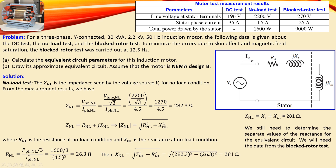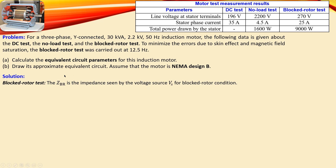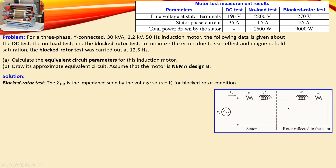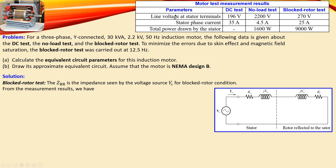In the no-load condition, Xs and Xm are in series, so Xs + Xm = 281 Ω. However, their individual values are not yet known — that requires information from the block rotor test. In the block rotor test, the load side is short-circuited. The block rotor impedance Zbr is determined from the measured line voltage, phase current, and total stator power.